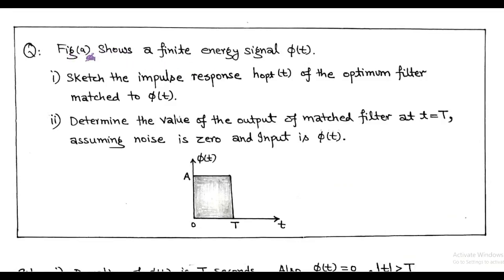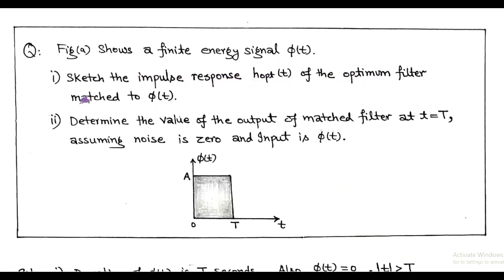The question presents a finite energy signal φ(t). The first part requires sketching the impulse response of the optimum filter matched to φ(t). The second part asks us to determine the value of the output of the matched filter at t equals capital T, assuming noise is zero and input is φ(t).